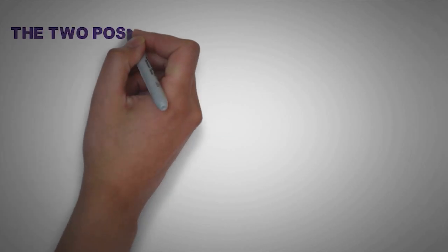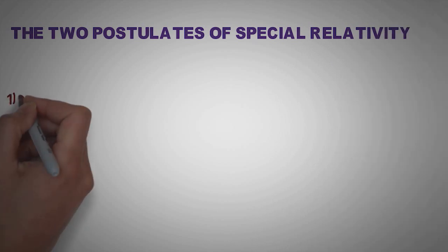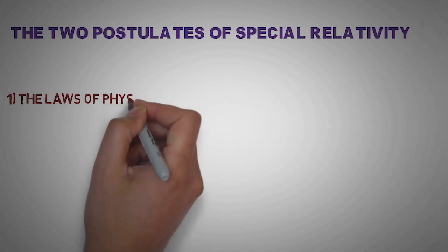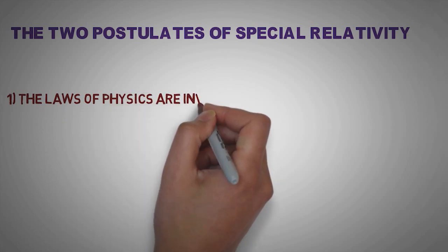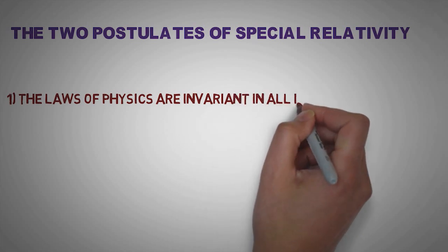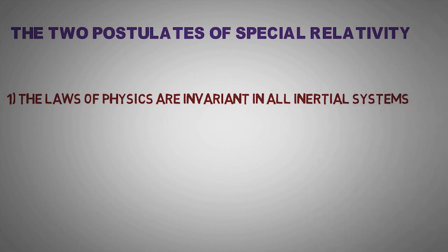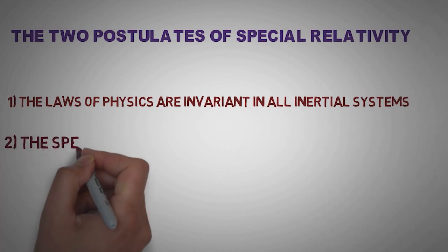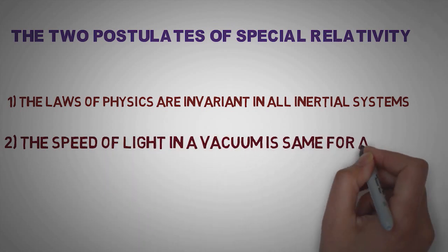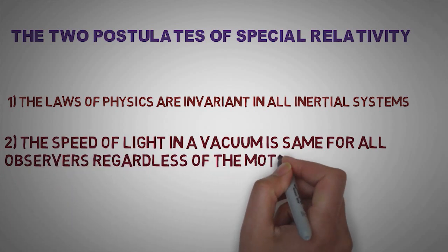The theory of relativity is based upon two postulates. The first postulate is the laws of physics are invariant in all inertial systems, which means that if two objects are at rest with respect to something, then they both experience the laws of physics in the same way. The second postulate implies that the speed of light in a vacuum is the same for all observers, regardless of the motion of the light source.